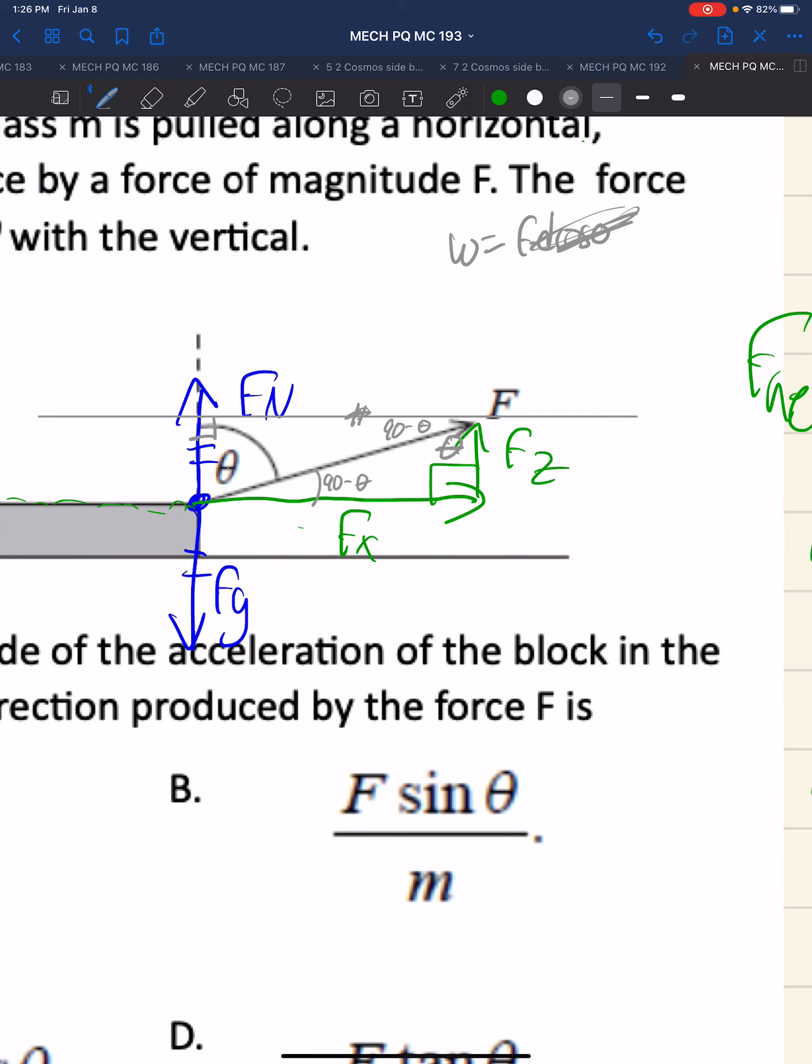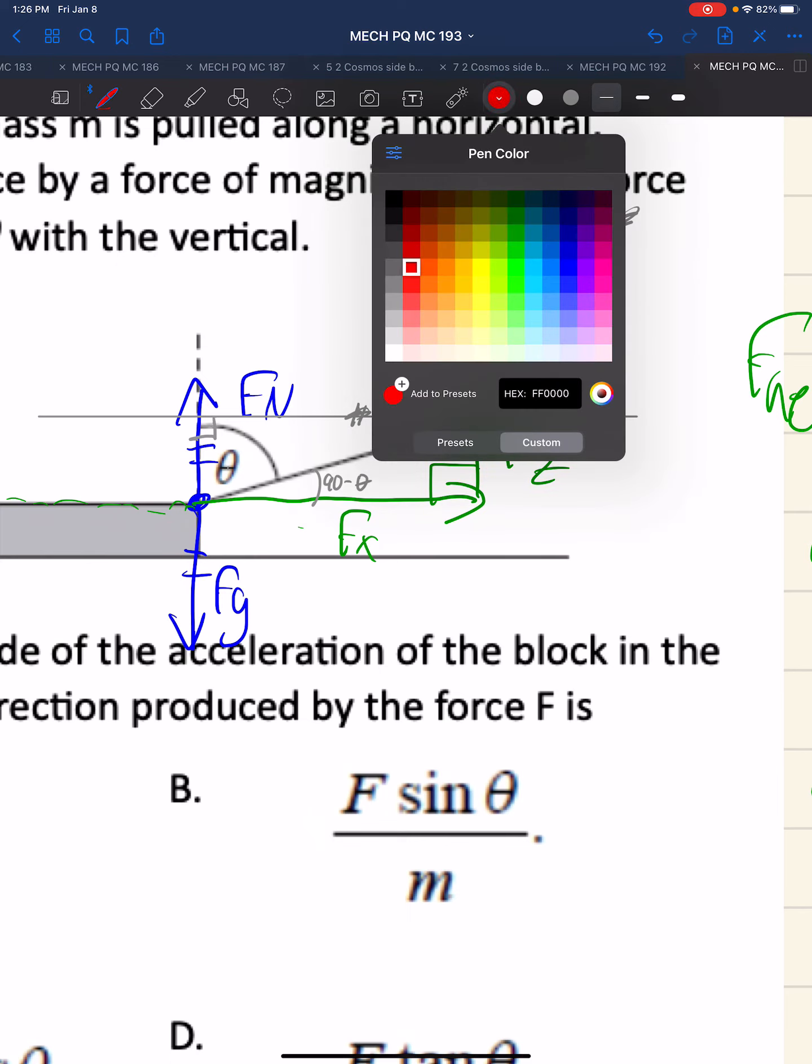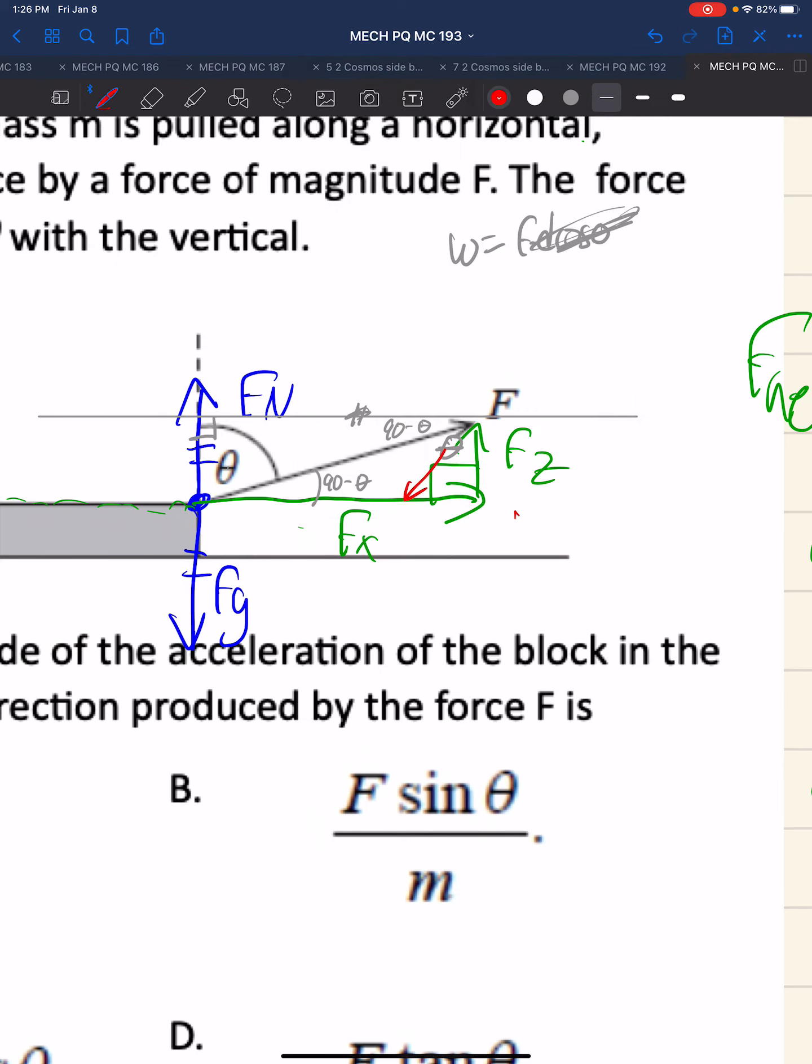So if I want this Fx, that is the opposite side compared to the hypotenuse F. So sine of theta is Fx over F, and therefore Fx equals F sine theta.